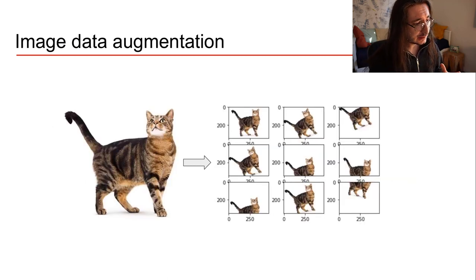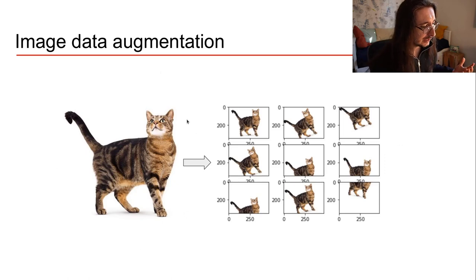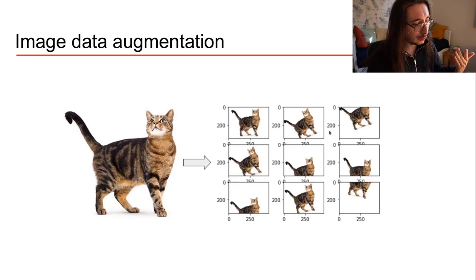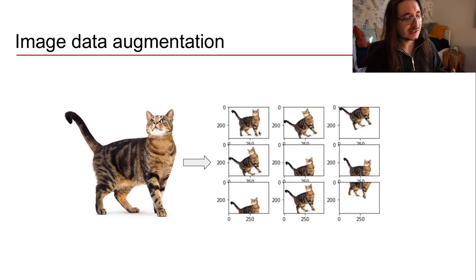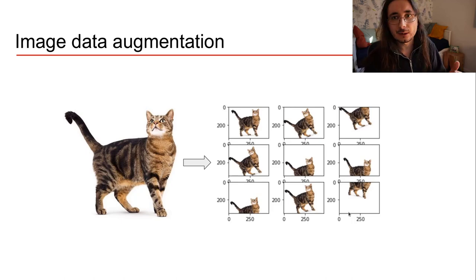Data augmentation is used extensively in image processing. Here we have an example: we have an image of a cat, and we derive a lot of images starting from it by using a bunch of different augmentation techniques — like cropping, rotation, or shifting the cat up and down or left and right.